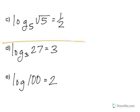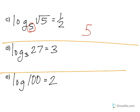In letter C, I have log of the square root of 5, base 5, equals one half. Base of the log becomes base of the exponent. Raise it to the one half power equals the square root of 5. And 5 to the one half power is indeed square root of 5.